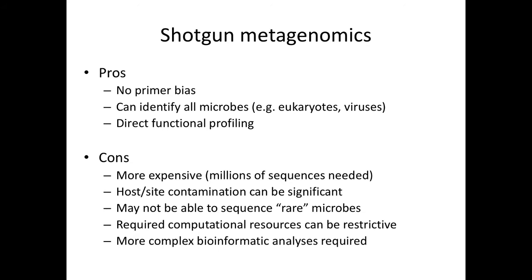Host DNA contamination can be really significant for shotgun metagenomics data. Because you're sequencing everything, if there are abundant microbes with large genomes, you might be oversampling those, and rare genomes might have little coverage. In contrast, with 16S amplification it's easier to get an idea of all variants present. Depending on the complexity of your community, you might need much higher sequencing depth for shotgun metagenomics. Also often overlooked is that computational resources required are more restrictive — you typically need more memory, and jobs might take a couple of days to run.